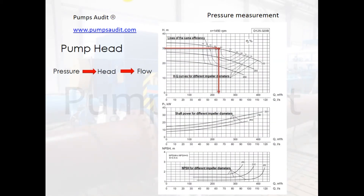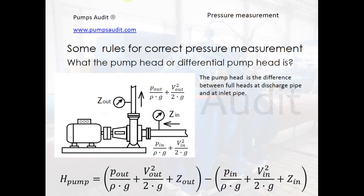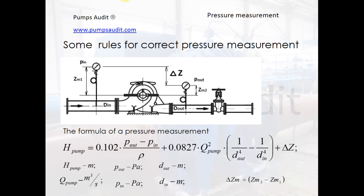This slide demonstrates: if we measure the pressure we can calculate the head, and using the pump curve we can find the position of the operating point and define flow, power, and NPSH. The pump head is the difference between the full head at the discharge pipe and the inlet. The full head is the sum of two components: velocity head and pressure head. It is also necessary to take into account the location of pressure gauges and the height difference between them. This formula can be transformed to a more applicable form using pump flow and pipe diameters.